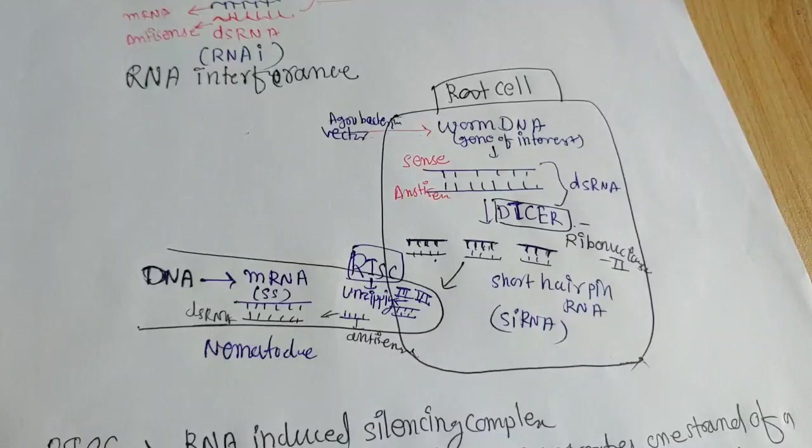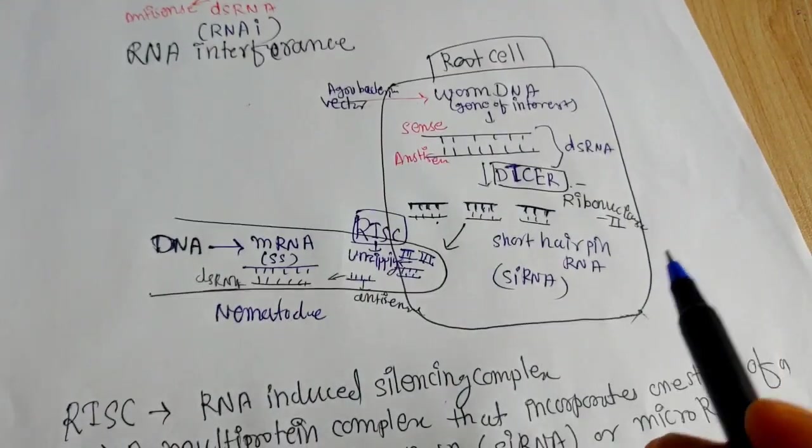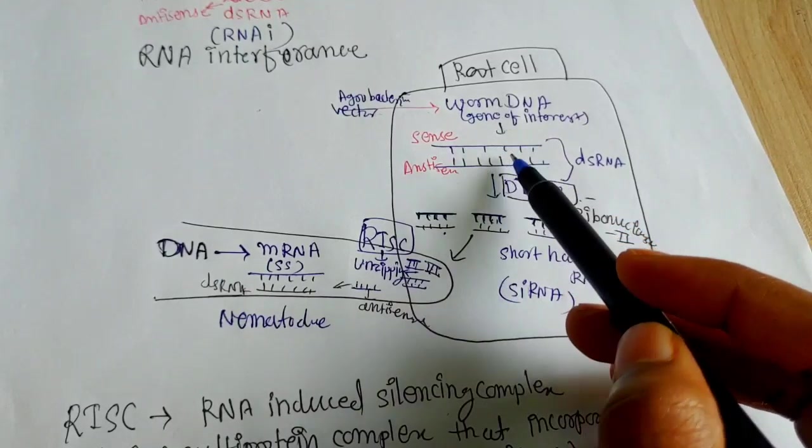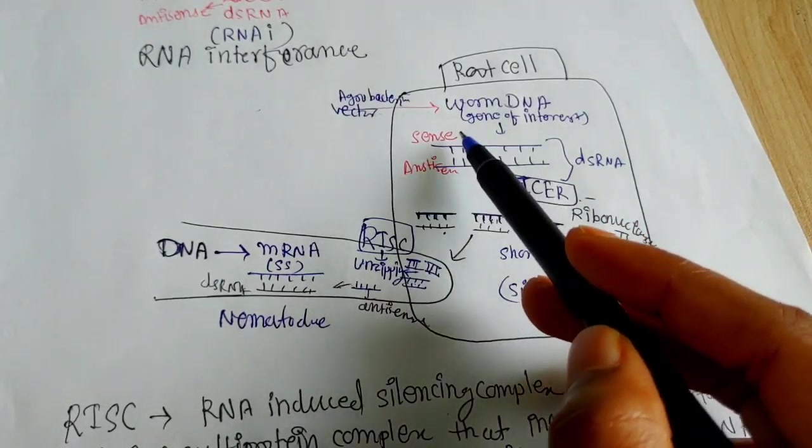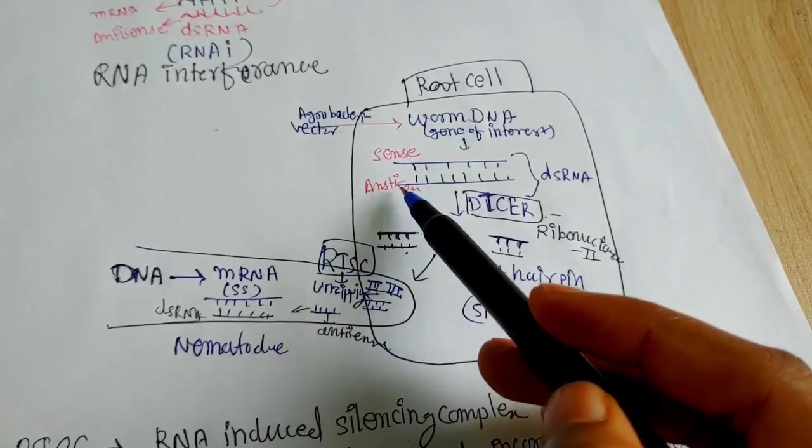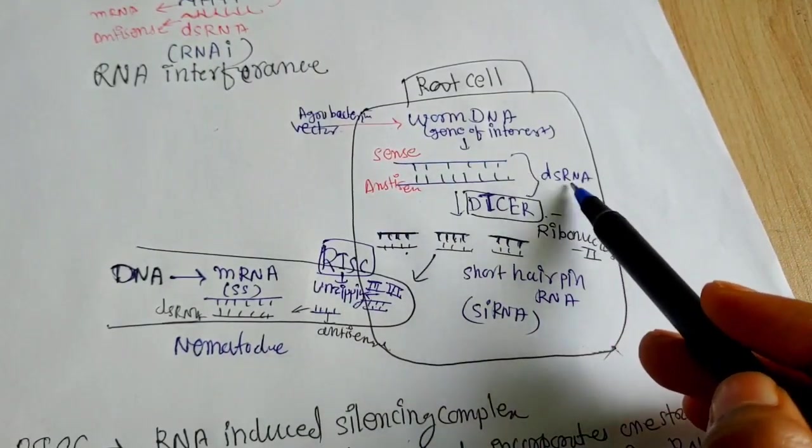This DNA is that kind of DNA which produces both sense and antisense RNA by the process of transcription. So this antisense and sense, they both are complementary to each other so they can make a double-stranded RNA.